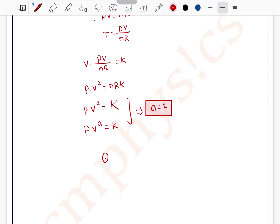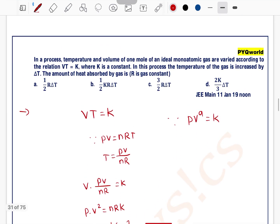Now, the amount of heat absorbed by the gas Q equals nC delta T. And the formula for C, that is specific heat capacity, can be written as R divided by 1 minus a plus CV. So R divided by 1 minus a is 2 plus CV.